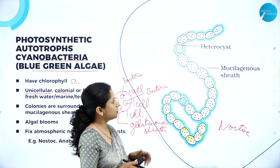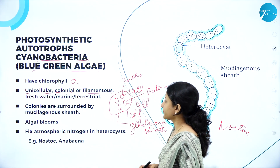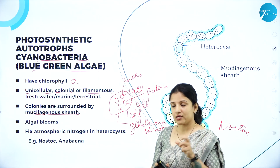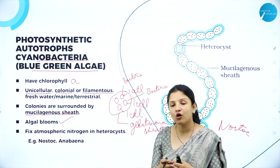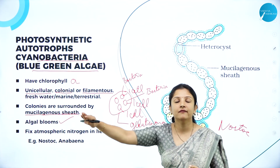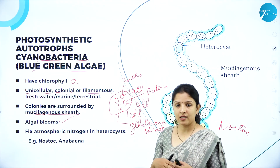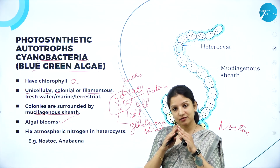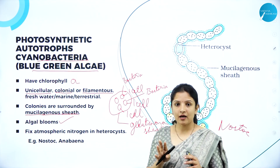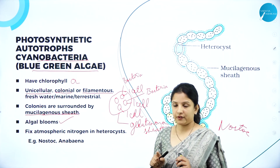Nostoc is an example for cyanobacteria — Nostoc and Anabaena. This is a filamentous form — the cells are arranged in a filament-like form, so it is a filamentous bacteria. As I told you, the colonies are surrounded by a gelatinous or mucilaginous sheath — they have a slimy sheath surrounding them. These together in groups can cause algal blooms. Like you might have seen on ponds, a thin slimy green color entirely covering the pond or lake — that is because of cyanobacteria. Overgrowth of cyanobacteria or blue-green algae is called algal blooms. But remember, they are not algae — they are bacteria only, named blue-green algae because they show some resemblance to algae having chlorophyll pigment.